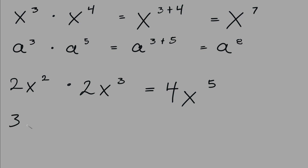Let's say we had 3a to the power of 3 multiplied by 4a to the power of 4. You multiply your coefficients: 3 times 4 is 12. Put down your variable a, and add the exponents: 3 plus 4 is 7. So the answer is 12a to the power of 7.